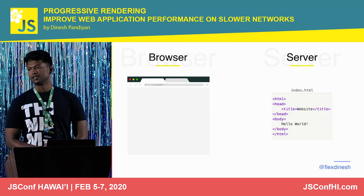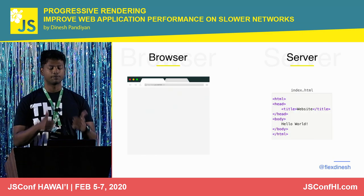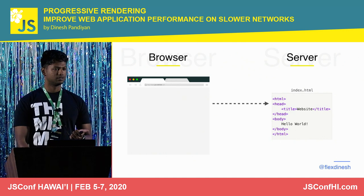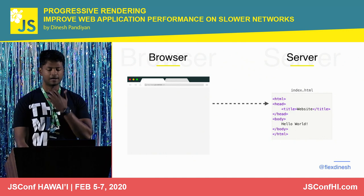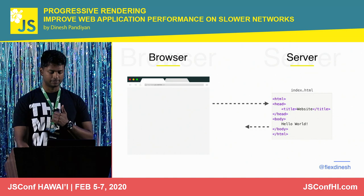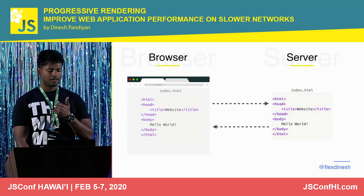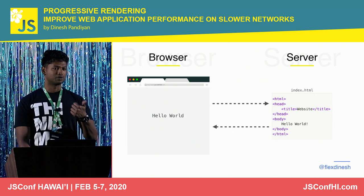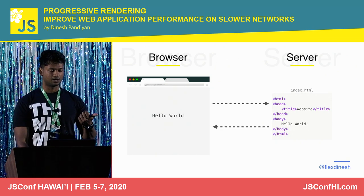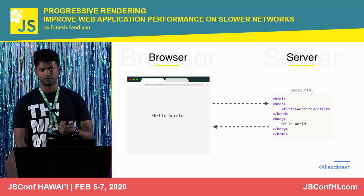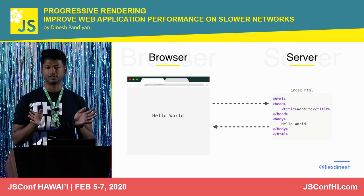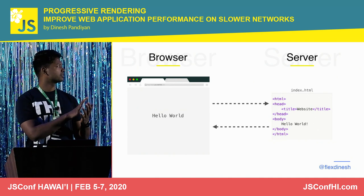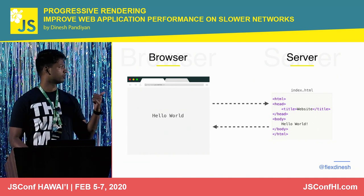If you take any website, the render process is pretty simple. Your browser makes a request, your server has the HTML, your server sends a response back. Your browser then parses the HTML and paints the content on the screen. It's very straightforward — HTML comes from the server, your browser takes the HTML, parses it, and paints it on the screen.